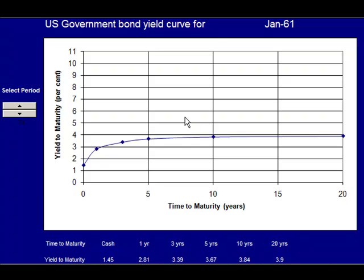This was the Bretton Woods period where there were fixed exchange rates, so monetary policy — unlike today — was tied to defending the exchange rate. The two ends of the yield curve, the two parts of the operation — selling at the short end and buying at the long end — were devised to sterilise the impact on the money supply and therefore not create problems for their exchange rate.